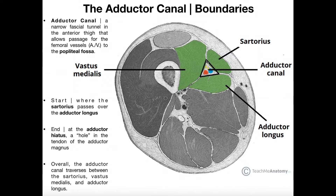Here we can actually see a cross section of the thigh, and we can see the adductor canal. At this level of the thigh where the cross section was taken, we can see it's a canal that runs between three muscles: we have the vastus medialis, which is a quadricep muscle, the sartorius, and then the adductor longus. We can see some nerves running through that, here's a vein — this is probably the femoral vein — and then we've got this artery, which would be the superficial femoral artery, or just the femoral artery. This is a cross-sectional view of it.